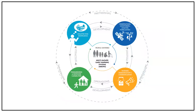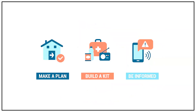Early Warning Systems involve the development and implementation of early warning systems that can provide advance notice of an approaching earthquake, allowing people to take protective measures. Emergency Planning covers the development of emergency plans and procedures that can be implemented in the event of an earthquake, including evacuation plans, search and rescue operations, and medical response.